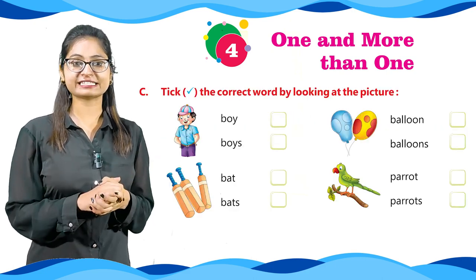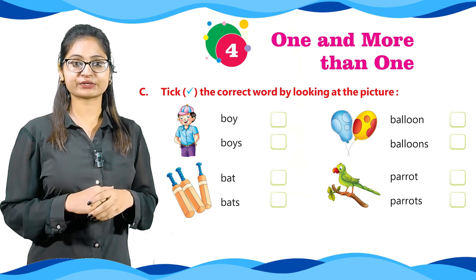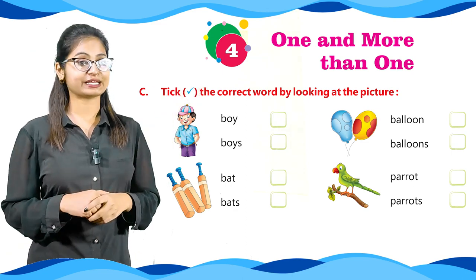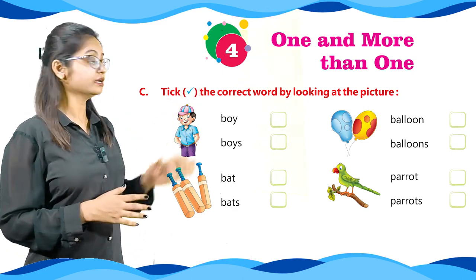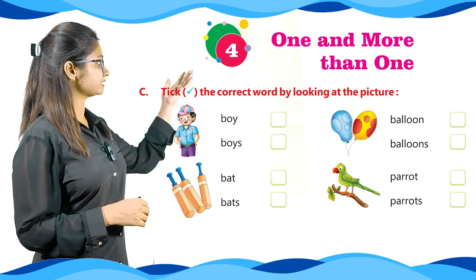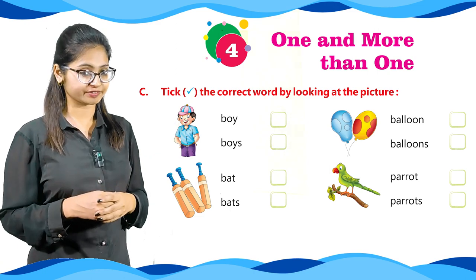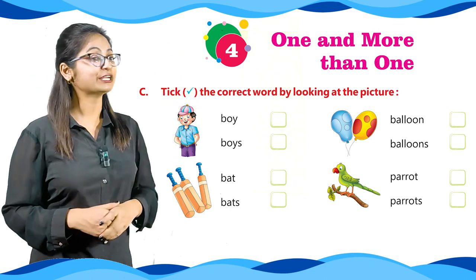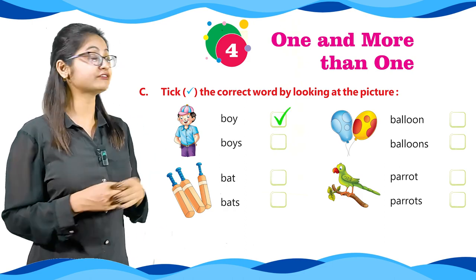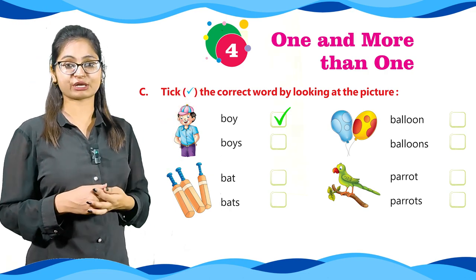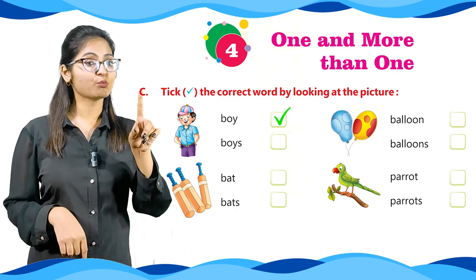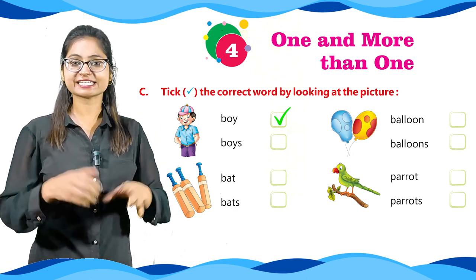Let's read Part C: Tick the correct word by looking at the picture. In picture one, we can see a boy, and the options are boy and boys — of course it's boy. Next we have a different picture — options are balloon and balloons. We can see there is more than one balloon, so what would we write? Yes, balloons.